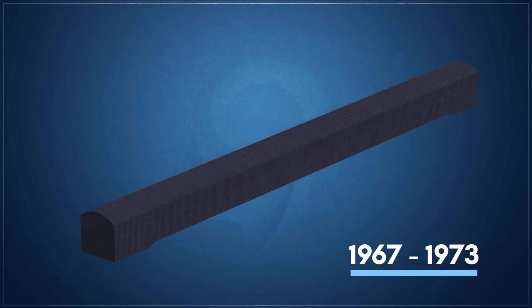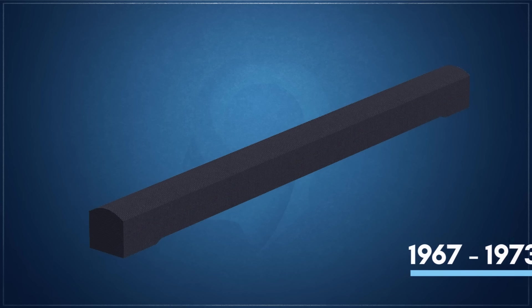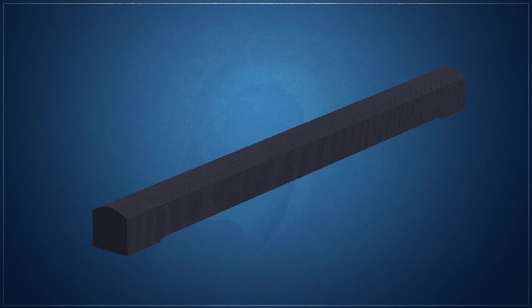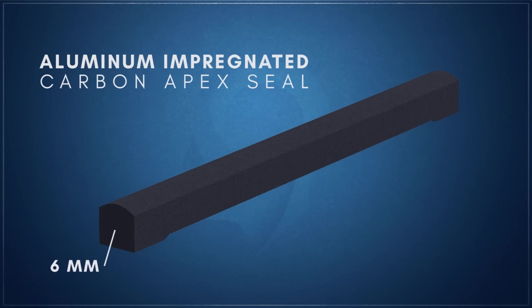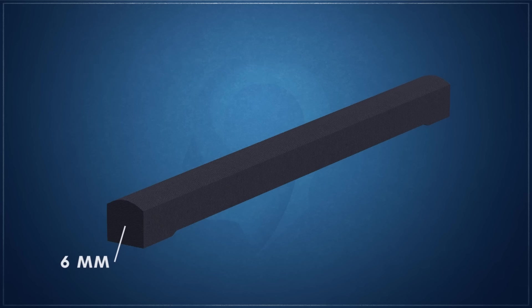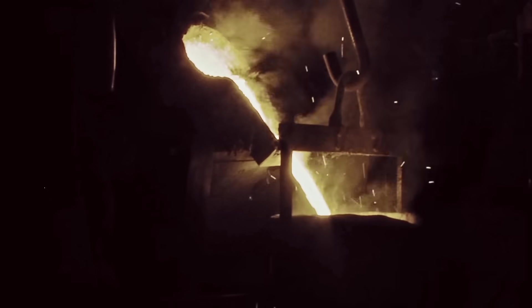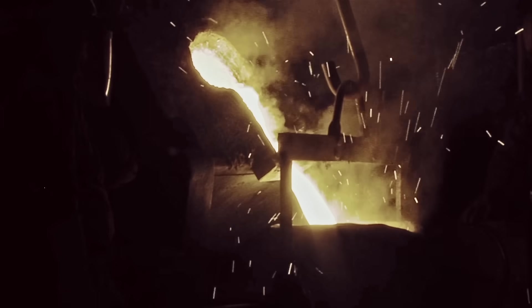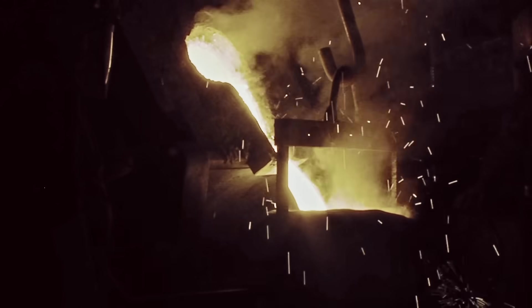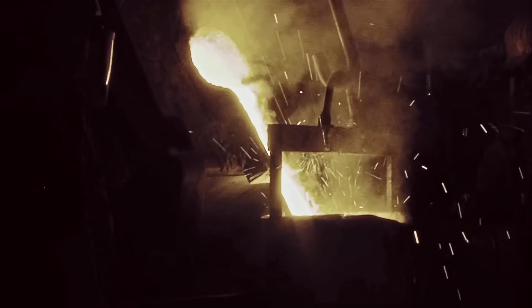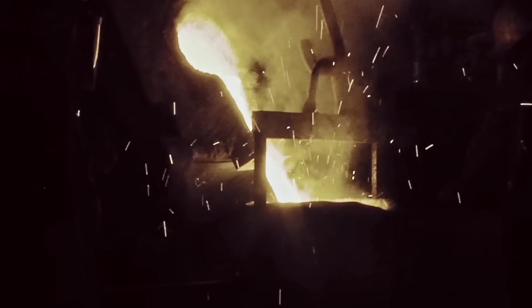From 1967 to 1973, Mazda switched to the use of a 6mm aluminum impregnated apex seal, developed from a joint venture between Mazda and Nihon Carbon. This new design utilized Nihon's pyrographite high-strength carbon compound technology. To an extent, these carbon seals were self-lubricating, addressing the issue facing the rotor housing wall surface.